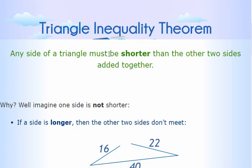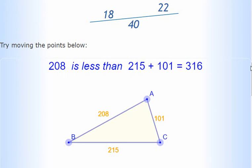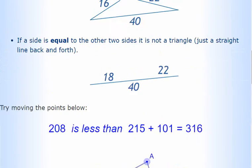Any side of a triangle has to be shorter than the other two sides. So the sum of any two sides added together has to be more than the other short side. There you go. So there's the basic idea of triangle inequality theorem.